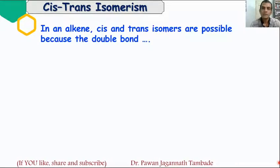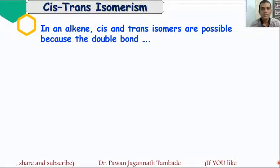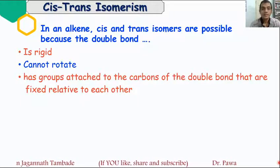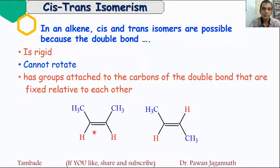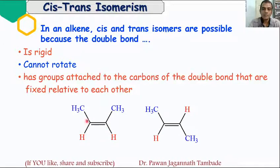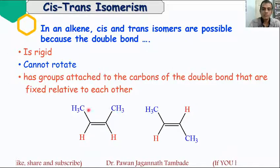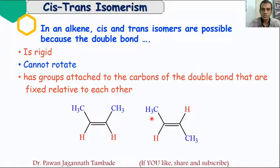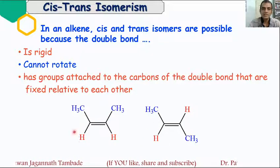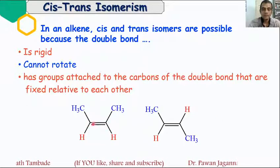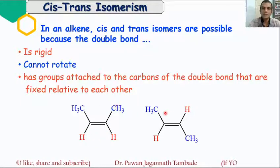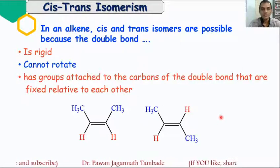In the case of alkenes, cis and trans isomers are possible because the double bond present in alkenes is rigid — it cannot rotate — and thus the atoms or groups across the double bond are in fixed positions. For example, in 2-butene, two different arrangements of atoms or groups across the carbon-carbon double bond are possible: either the two CH3 groups are on the same side, or on opposite sides. Because the double bond cannot rotate, the position of atoms or groups across it is always fixed, and thus isomerism arises.